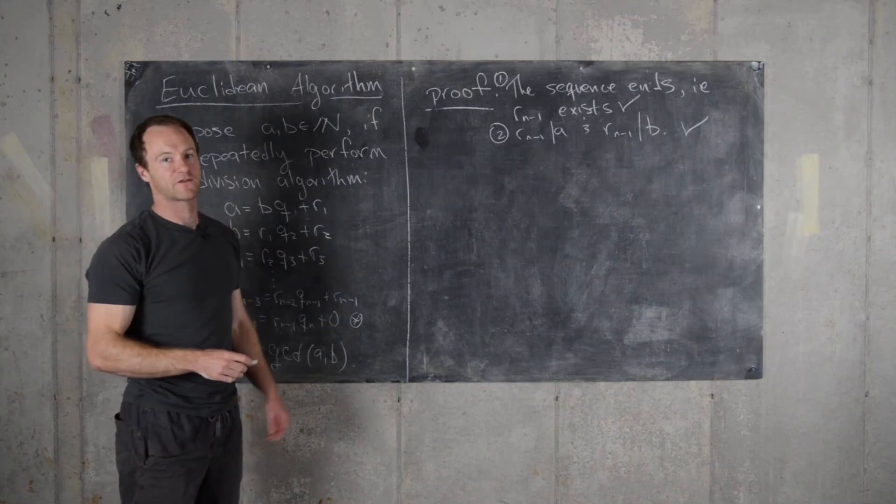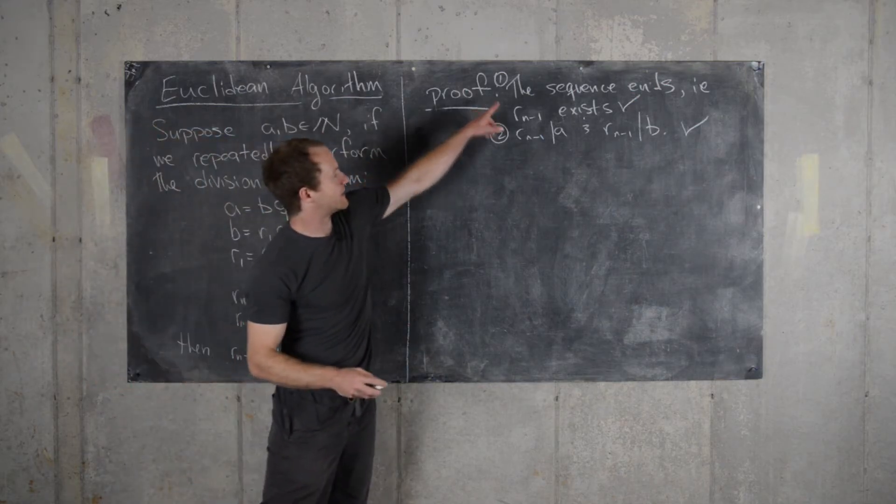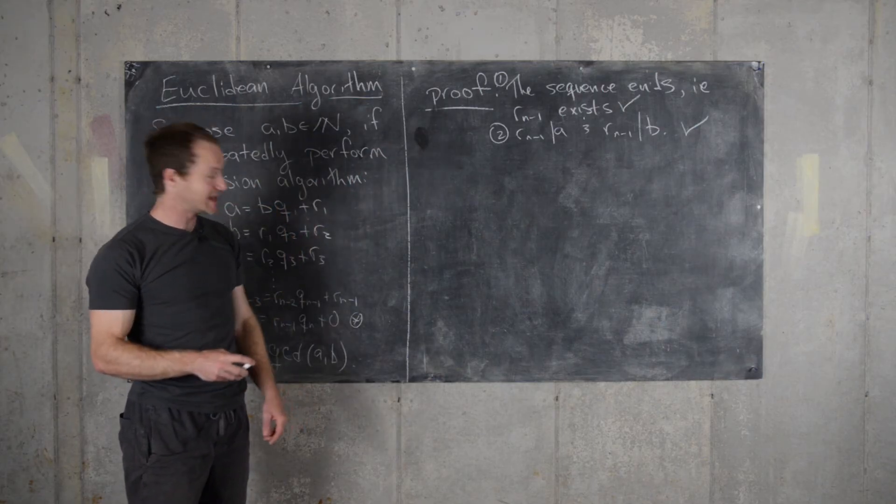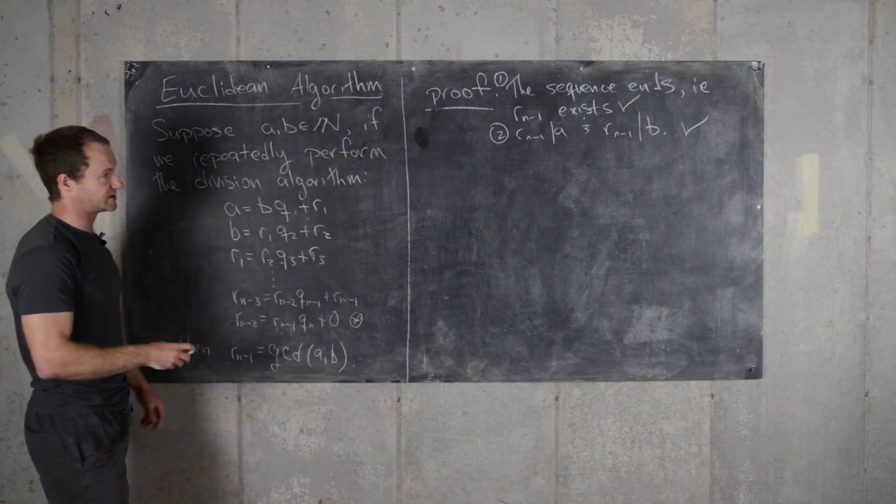So now we're ready to finish off the proof. I've reminded ourselves that this sequence of remainders actually ends. In other words, this R N minus 1 exists, the last non-zero remainder.